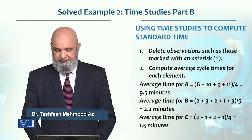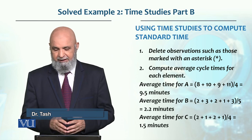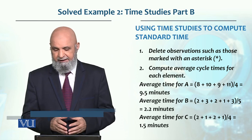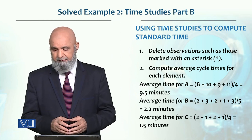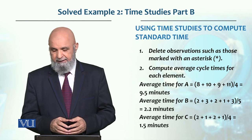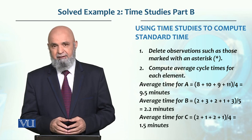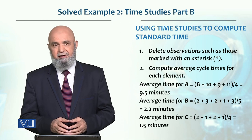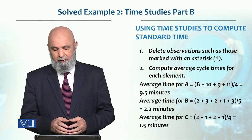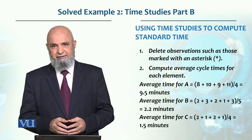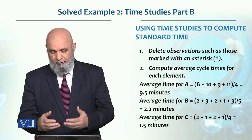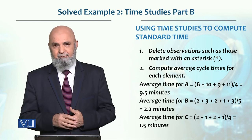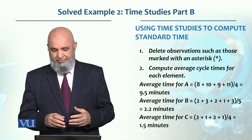So basically the average time for work element A is 8 plus 10 plus 9 plus 11 divided by 4, which gives us 9.5 minutes. That is the average time for work element A.